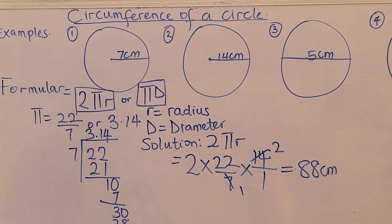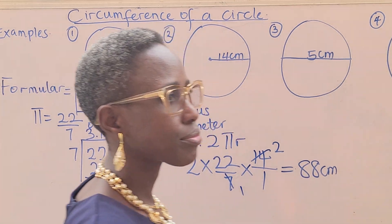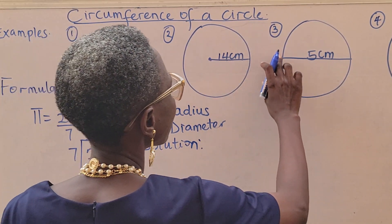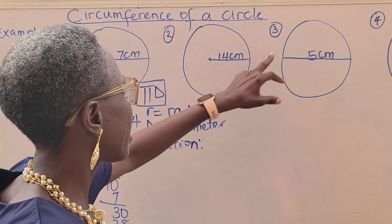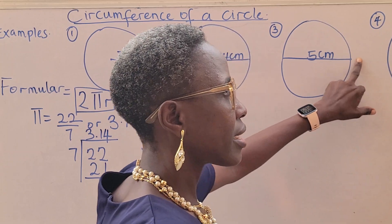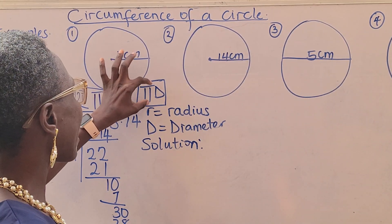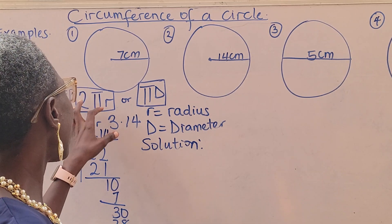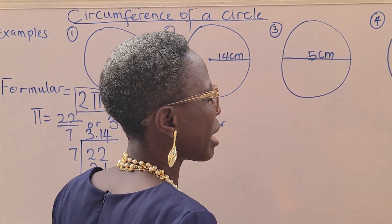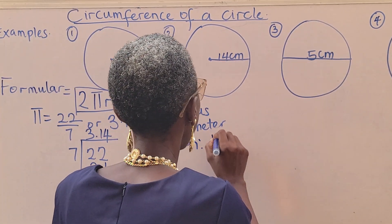So the circumference of this second circle is 88 centimeters. Now the third question is about giving us a diameter. You can see it's from this end of the circle to this end. This is a diameter. So you go ahead and use πd. You cannot say 2πr in this case. Once you are given the diameter, just use this formula, πd.